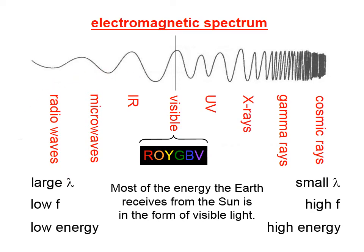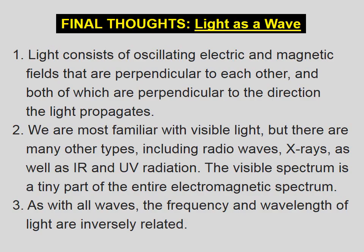Light consists of oscillating electric and magnetic fields that are perpendicular to each other, and both of which are perpendicular to the direction the light propagates. We are most familiar with visible light, but there are many other types, including radio waves, X-rays, as well as infrared and ultraviolet radiation. The visible spectrum is a tiny part of the entire electromagnetic spectrum. As with all waves, the frequency and wavelength of light are inversely related.